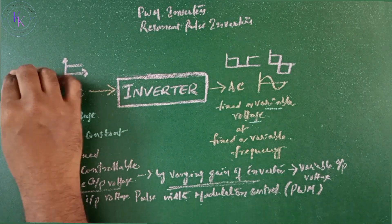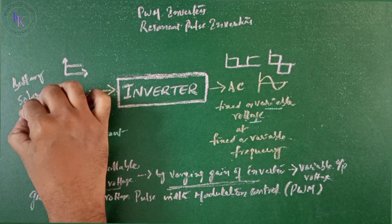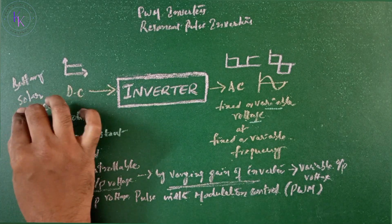The input may be a battery, solar cell, fuel cell, or any other DC supply.